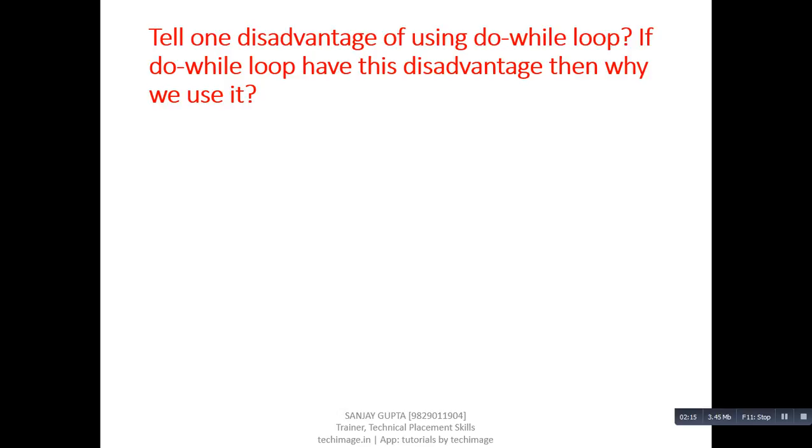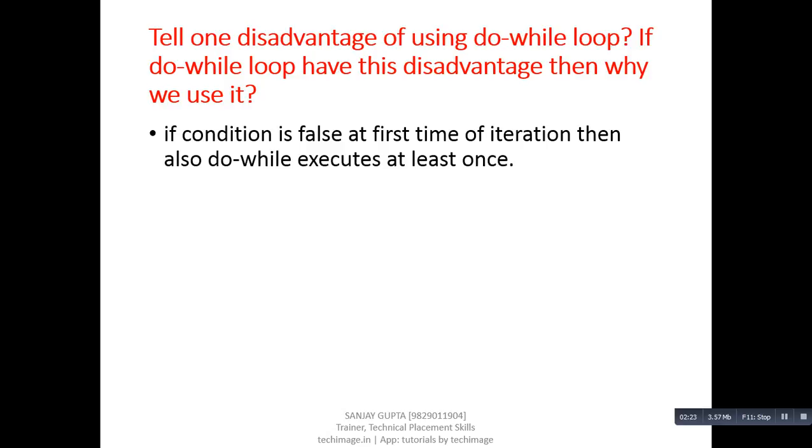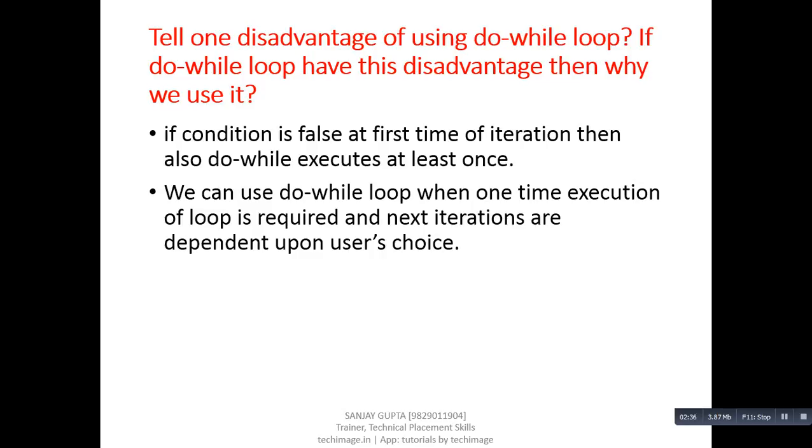Next question: Tell one disadvantage of using do-while loop. If do-while loop has disadvantage, then why we use it? Answer: The disadvantage is if condition is false at first time of iteration, then also do-while executes at least once. Why we use it? We can use do-while loop when one time execution of loop is required and next iterations are dependent upon user's choice.